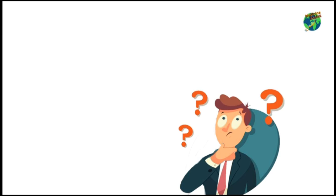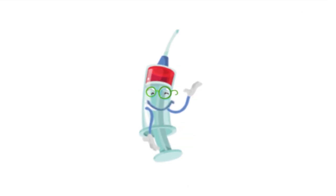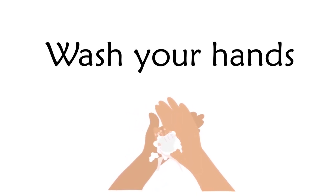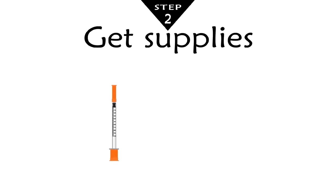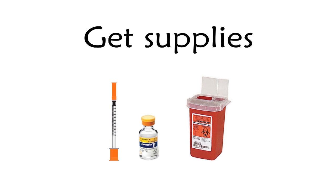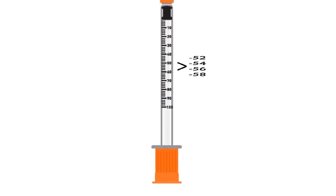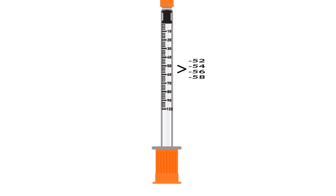It seemed to me that my dad injects his insulin in a different manner each time. There are standard steps that need to be followed. Let's begin by washing your hands. The supplies you will need: insulin syringe, insulin vial, and a sharps container. In the syringe, the lines help you to tell how much is in the syringe. On one type of syringe, each line may be two units. There are also syringes that have markers for each unit and each half unit.